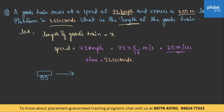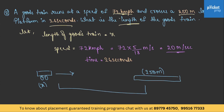The train is travelling in this direction and there is a platform 250 meters long but stationary. The total distance covered will always be the train's length plus the platform's length, that is x plus 250. We have the speed, time, and distance, and we relate them using speed = distance / time.